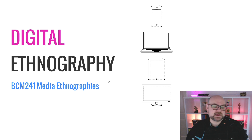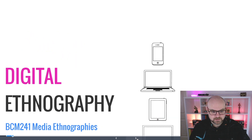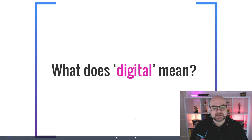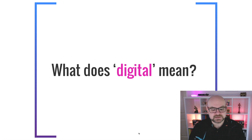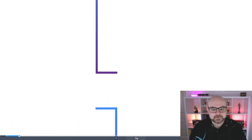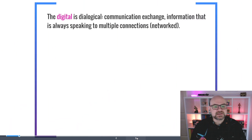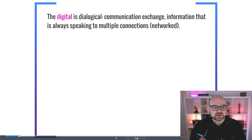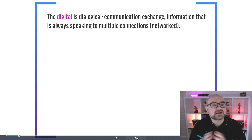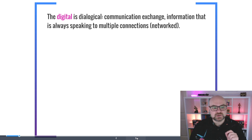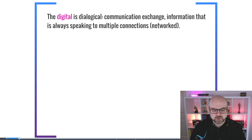Let's get stuck into it. Firstly, let's think about what the digital means — what does the word actually mean? The digital is dialogical, meaning it involves a communication exchange. Digital information is always networked, always speaking to multiple connections. The digital implies one-to-many, and really many-to-many. So when we talk about digital information or digital ethnographies, we're always implying networked connections.